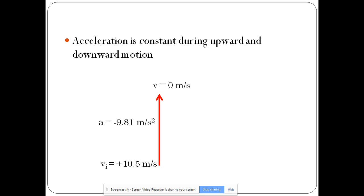Then what it's going to do, it's going to come back down and it's going to accelerate at negative 9.81 meters per second squared because it's constant. That acceleration is constant no matter if it's on its way up or on its way down. But see now the acceleration is in the same direction as the motion. So what's going to happen is the object is going to speed up.